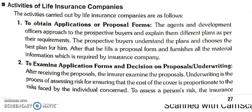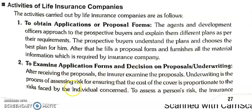After you fill the form, the application is verified. The second step is to examine the application form and make a decision on the proposal — this is called underwriting. Underwriting is the process of assessing risk to ensure the cost of cover is proportionate to the risk faced by the individual concerned. The insurance company assesses these facts to ensure the premium paid is appropriate for the risk.